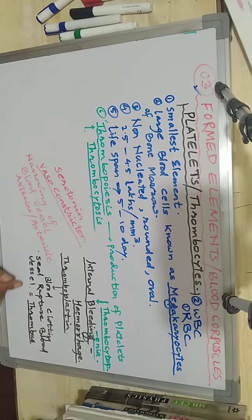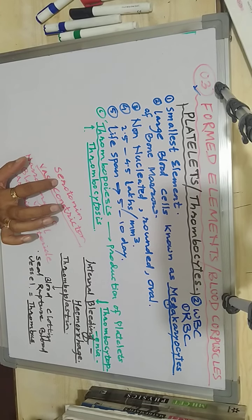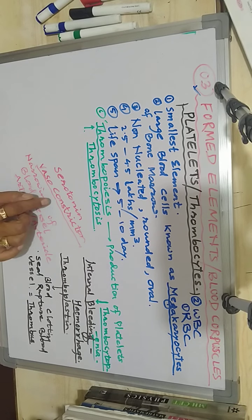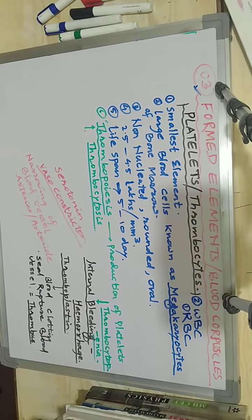By developing platelet plugs called thrombus, the blood vessels are sealed. Platelets also secrete serotonin, which acts as a local vasoconstrictor, narrowing the blood vessels so that the flow of blood gets stopped.